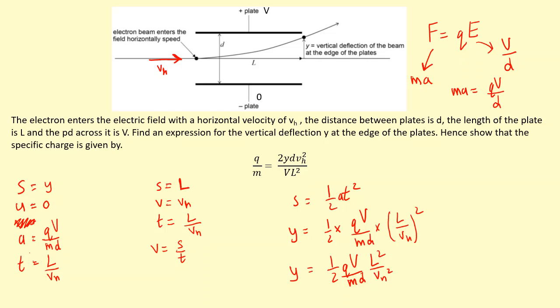And I'm going to rearrange this to get q over m as a subject. So I bring the 2d and the vh squared to the other side, so I get y, 2d, and the vh squared to the other side. And then if we divide by the V and the L squared, we get q over m, which is the specific charge left over.